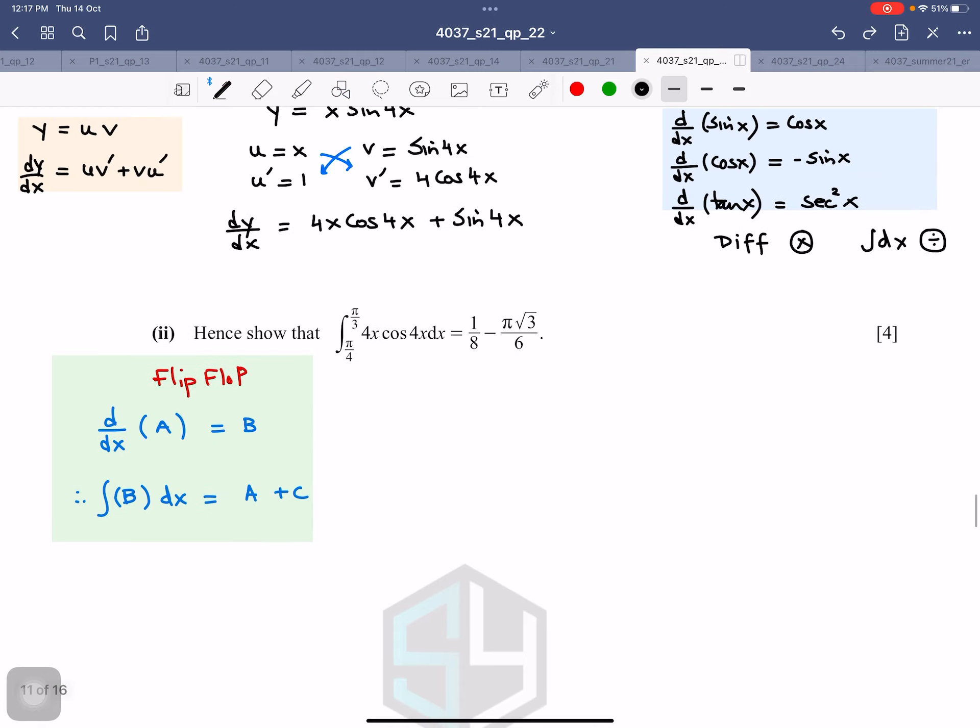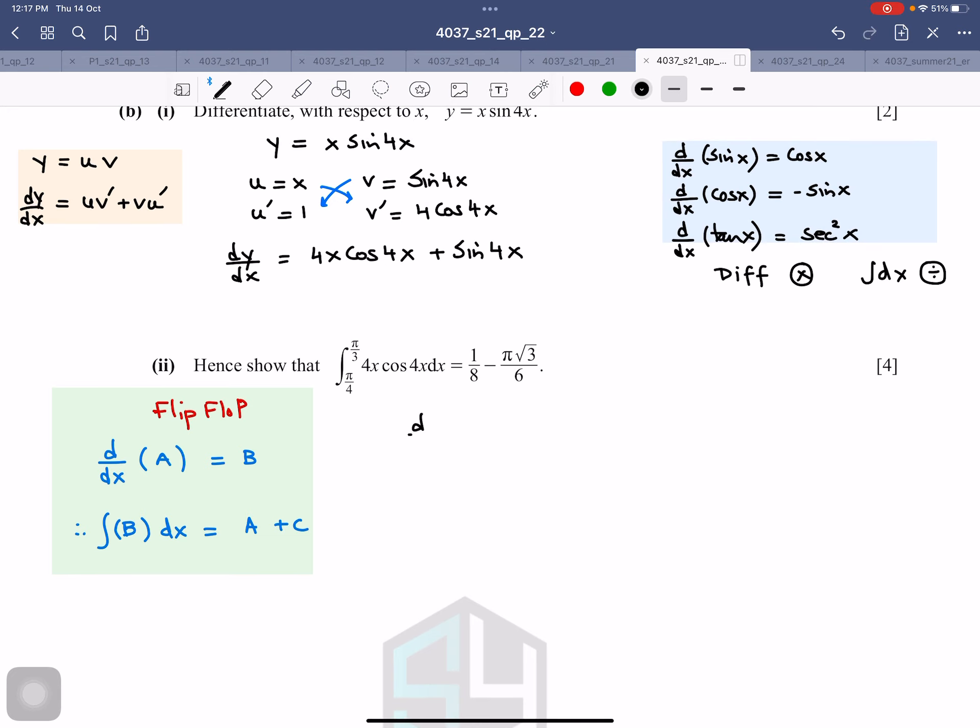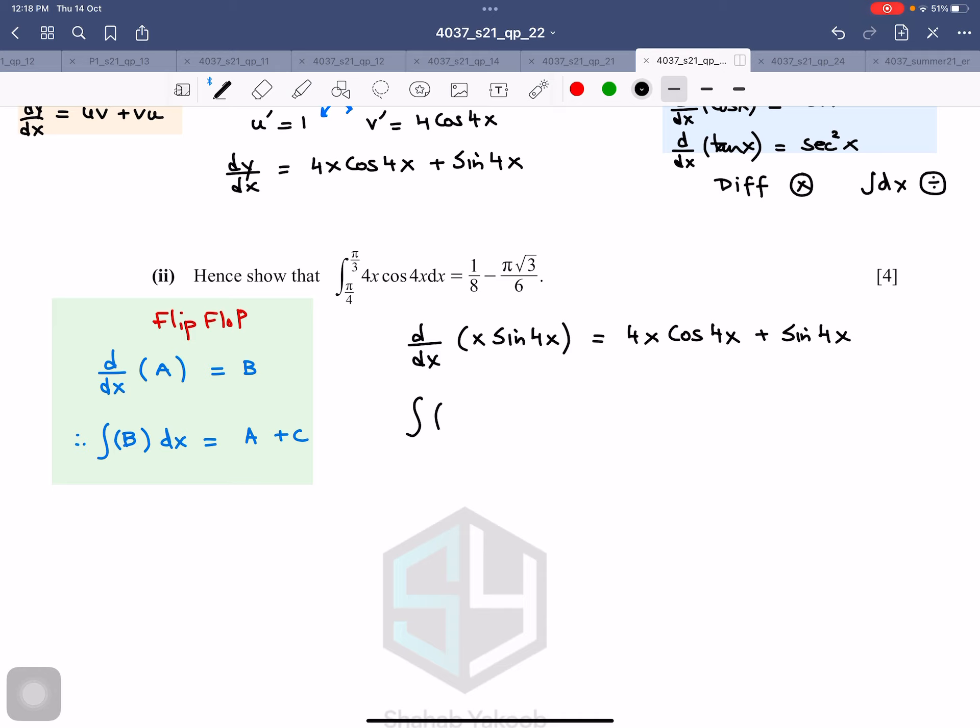First of all, we know that we have to use the above result. Derivative of x·sin(4x) equals 4x·cos(4x) plus sin(4x). In other words, integral of 4x·cos(4x) plus sin(4x) dx equals x·sin(4x). This is not any rocket science. This is simply this: derivative of this is this. Therefore, integral of this should be this.